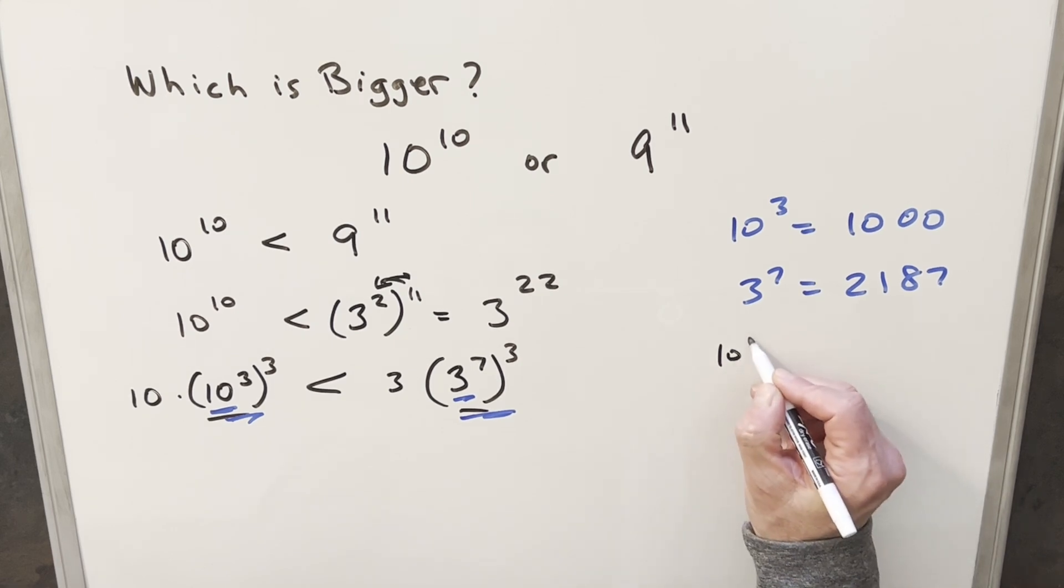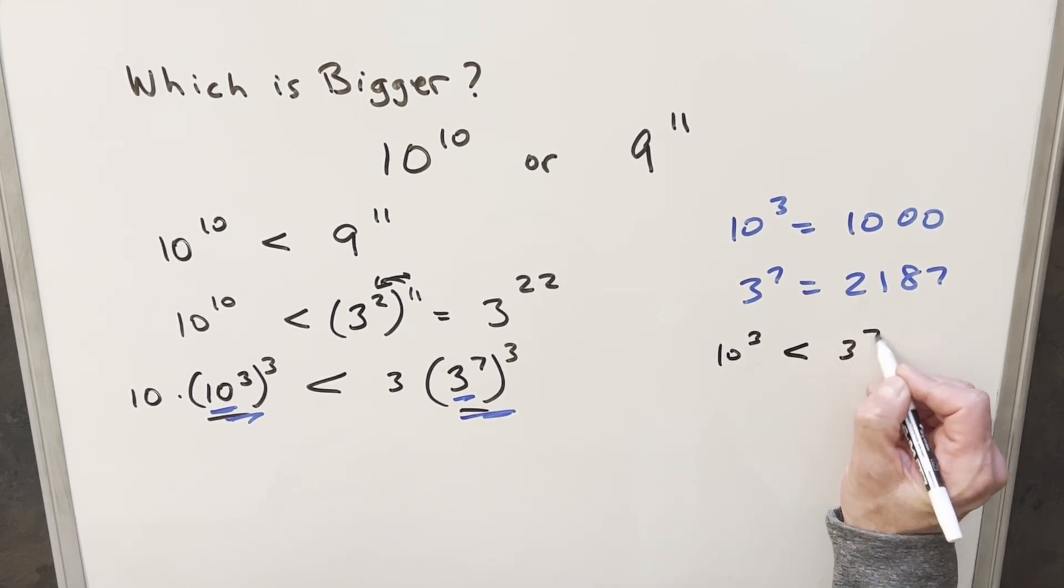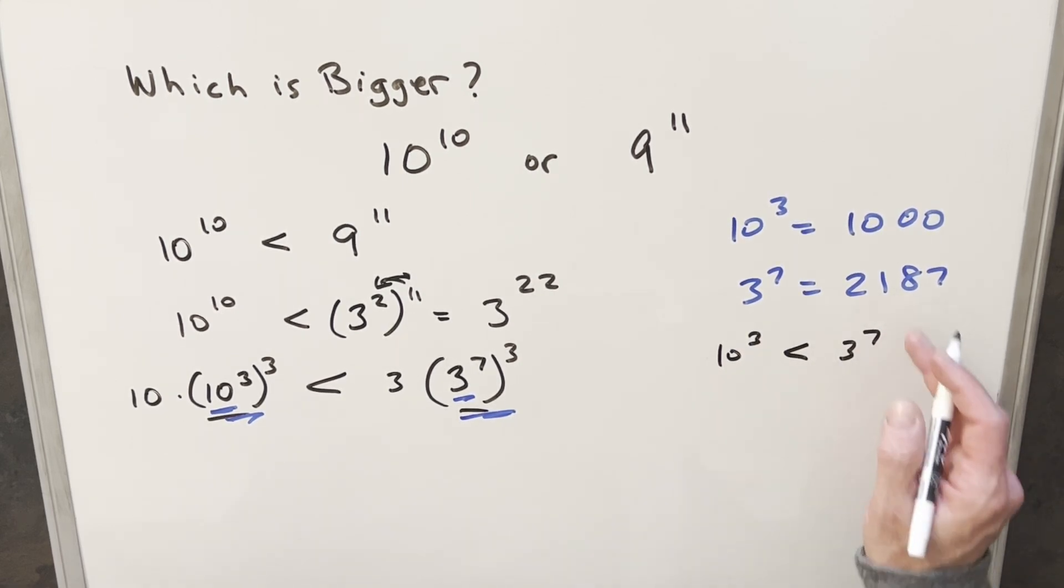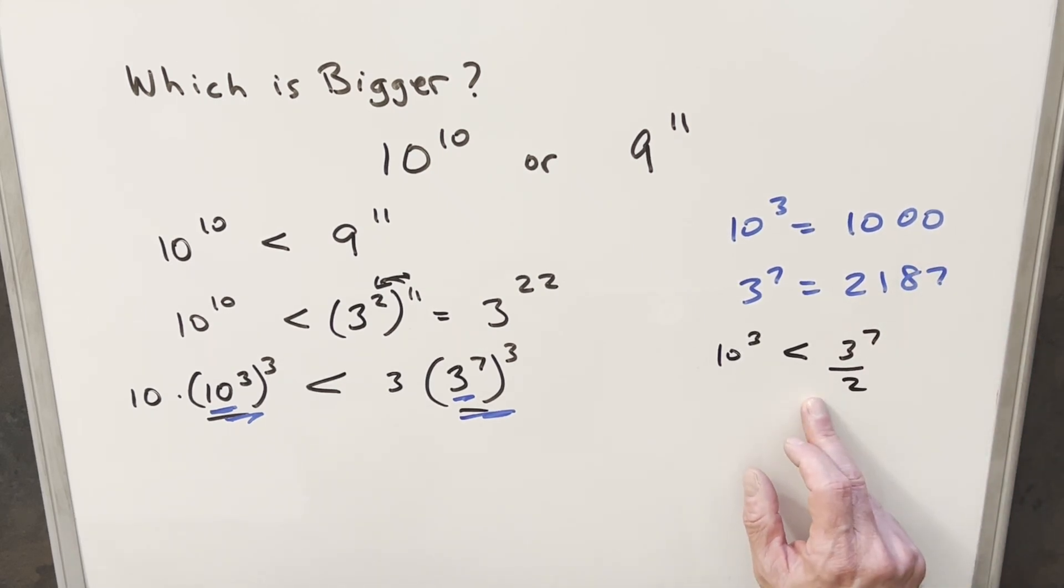So coming back over here, we know that 3 to the 7th is greater than 10 cubed, because it's 2187. Now what I can also use though, even if we cut this in half, 3 to the 7 divided by 2 is going to be something like 1,090, still greater than 1,000, so this is going to be true.